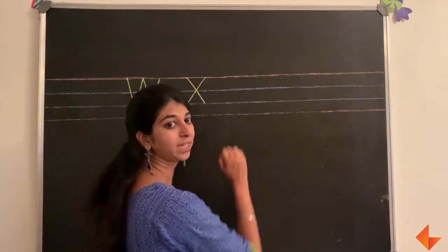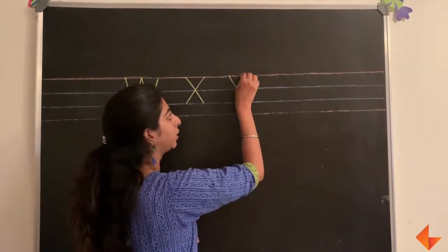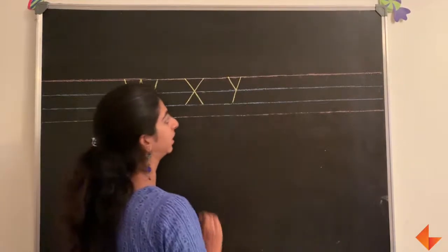To write the letter Y, draw a small slanting line and draw another big slanting line.